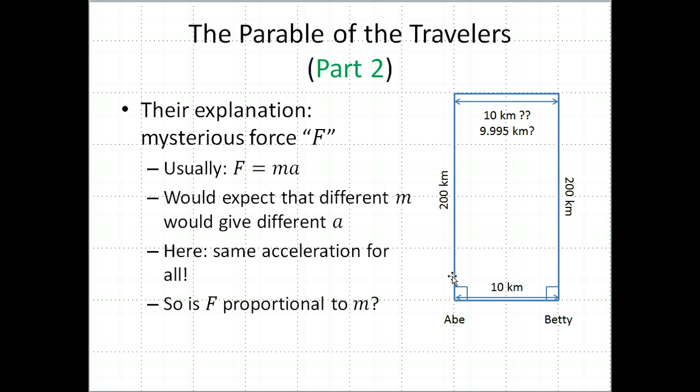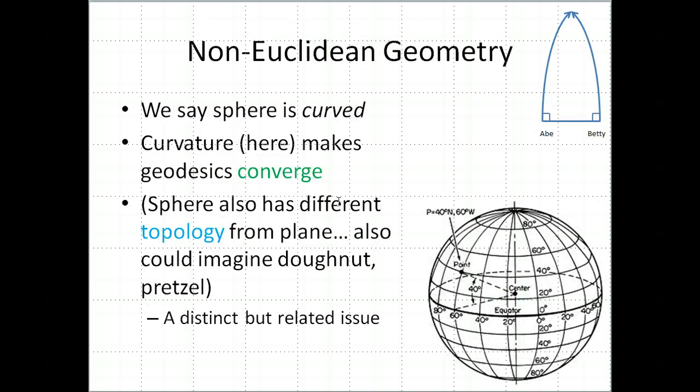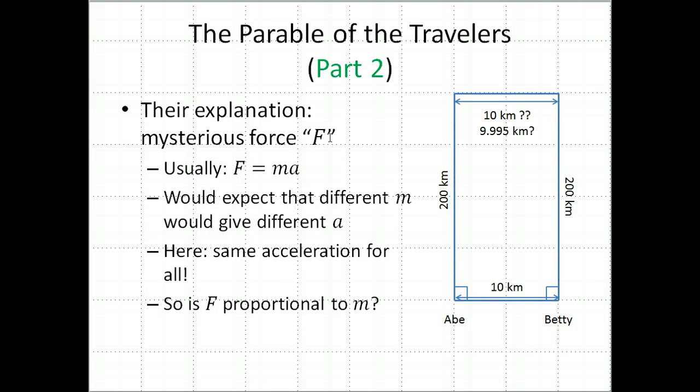Now, remember, we know why they're being pulled together. There is no mysterious force. There's no such thing. They're inevitably being pulled together because of the geometry of the sphere. They're following straight lines and they're doing nothing wrong and there's nothing actively pulling them together. It's just the way geodesics work on this sphere that happens. But they don't know that. So they're very naturally making up this mysterious force, but it has this very interesting property. It's giving the same effect, the same effect in terms of moving things around, essentially the same acceleration for all objects.